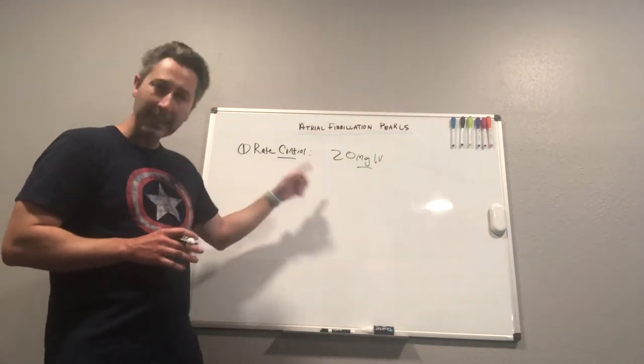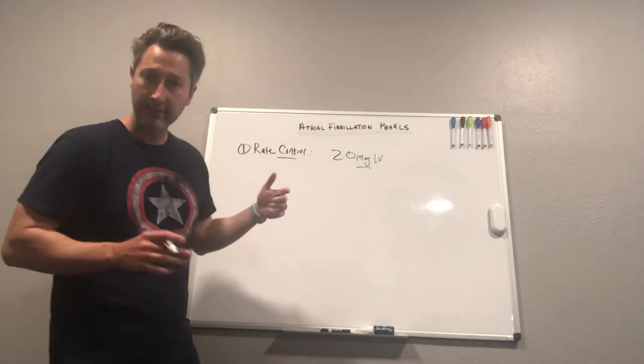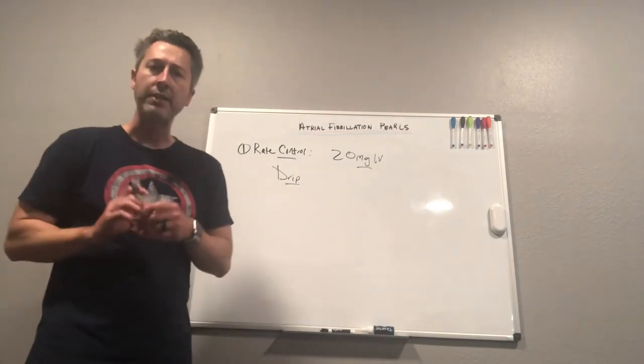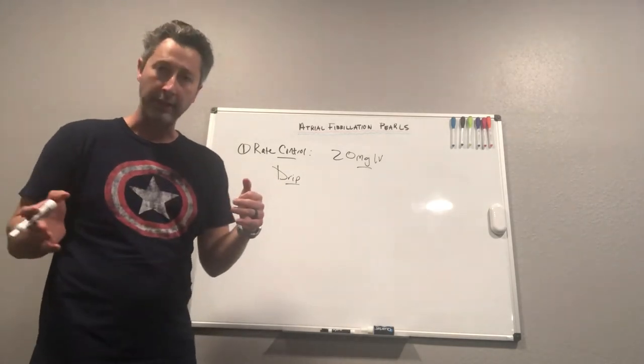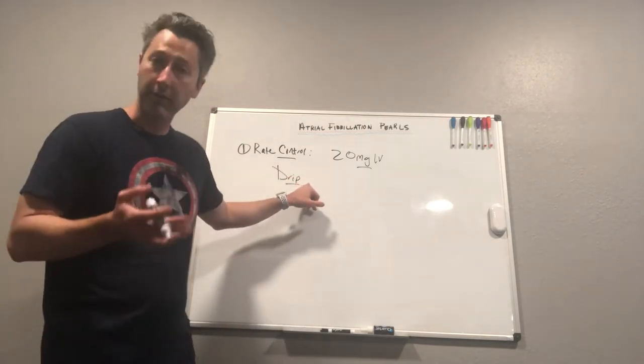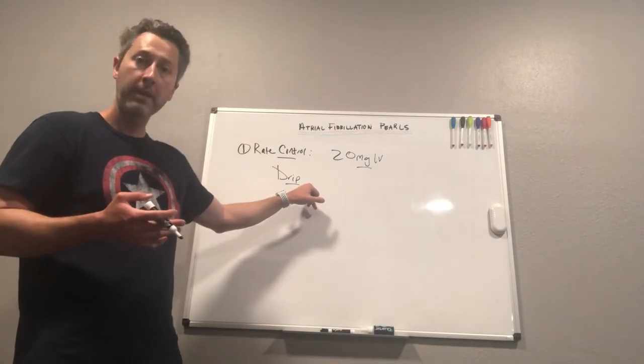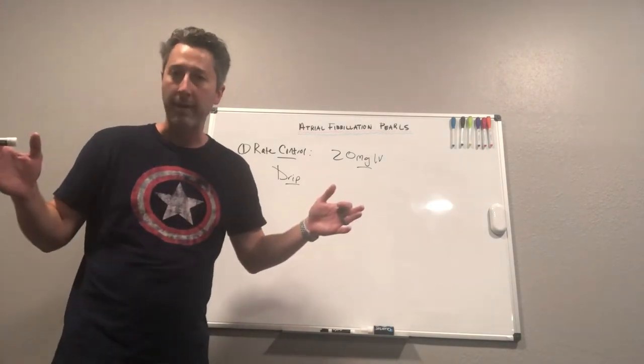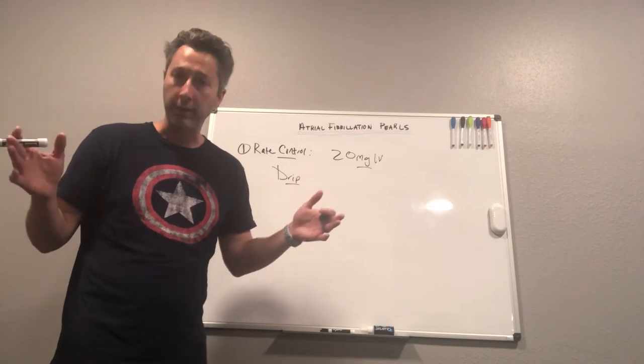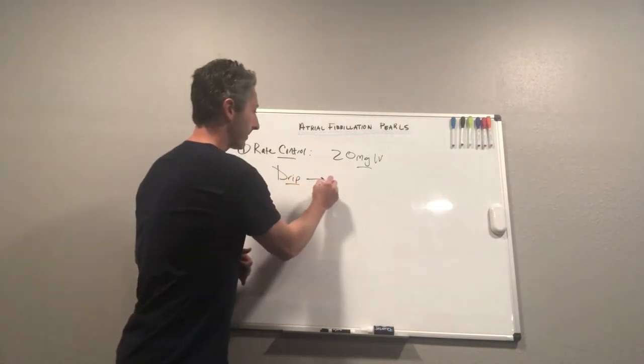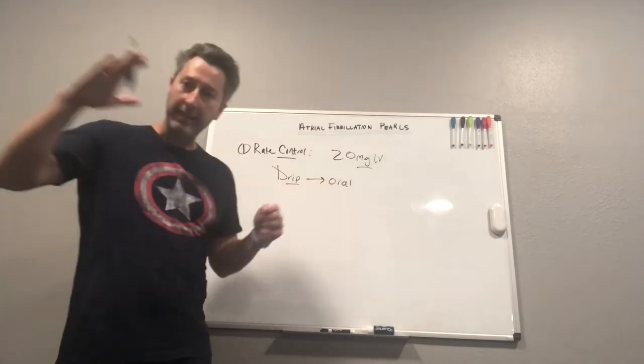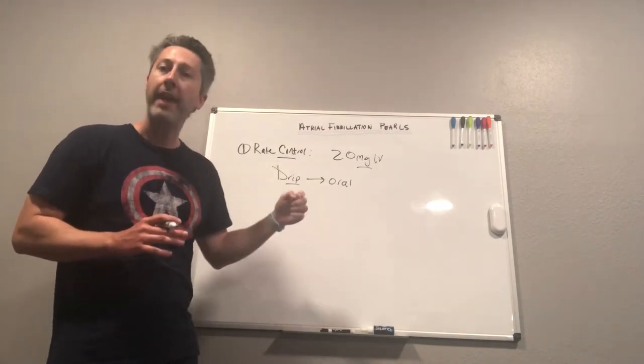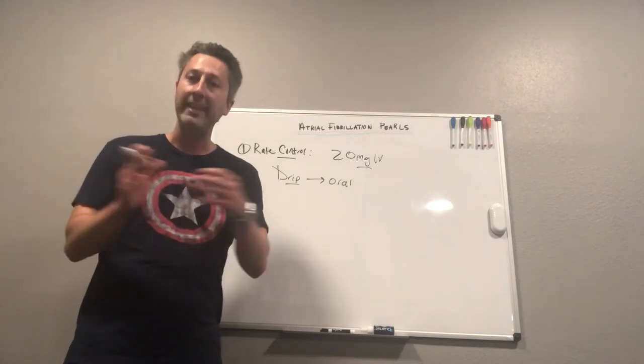Now the second part of this is that when we put somebody on a diltiazem drip, one of the more common mistakes that we make is we don't overlap the drip with an oral medication. So when somebody's heart rate is becoming better, a little under control with the diltiazem drip, what commonly happens is that this drip will titrate off and the patient will go some amount of time without any rate controlling medication. So what we really want to be doing is overlapping our drip as it's coming down with an oral medication before we take this drip off, and that'll ensure that the patient's rate stays under control.